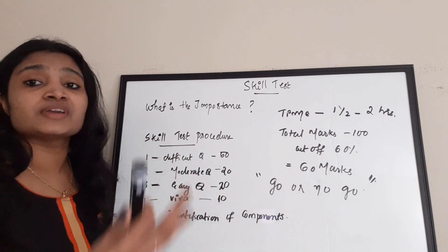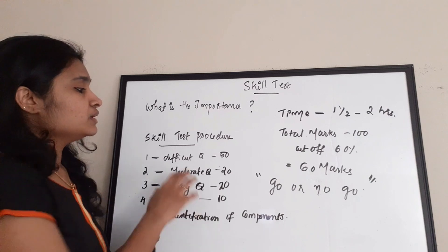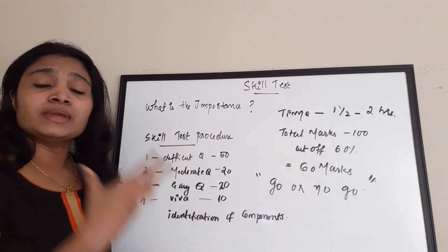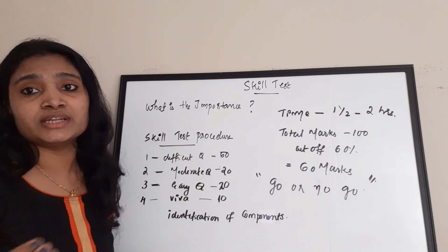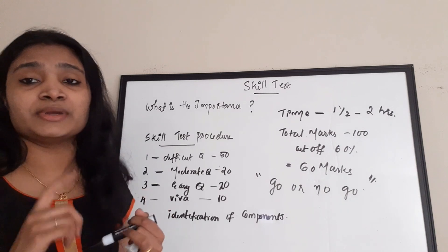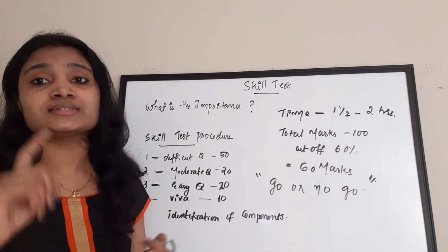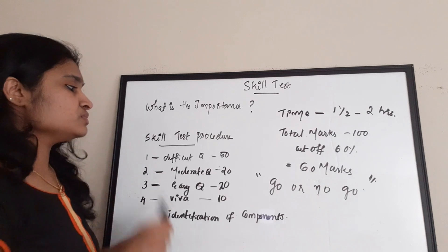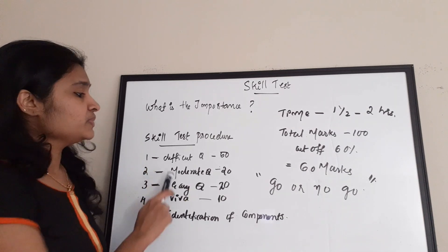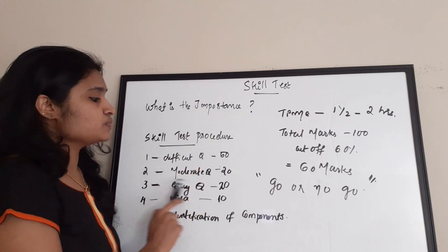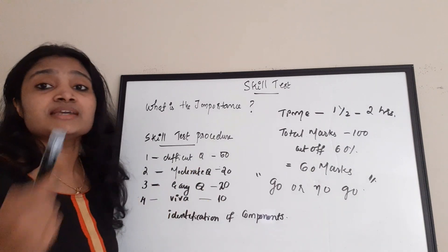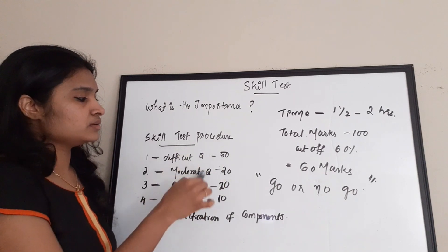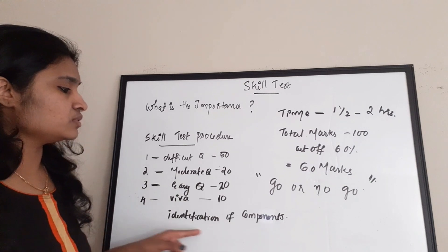The total marking is out of 100. The marks are split as follows: there will be a difficult experiment worth 50 marks, moderate experiments worth 20 marks, and an easy experiment worth 20 marks — followed by a viva. The experiments can come from any of the labs included in your diploma syllabus, such as digital lab, microprocessor lab, electronic devices, soldering experiments, and communication lab.